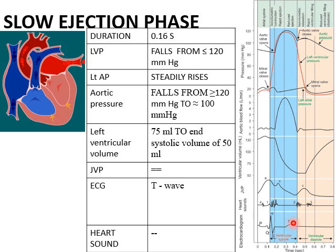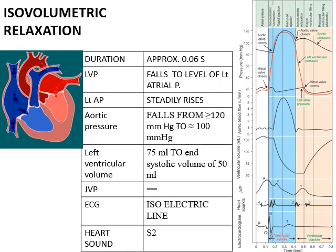Any abnormality in the reduced ejection phase may cause changes in the T wave. When ventricular pressure falls below 120 mmHg, closure of the aortic valve occurs; when it falls below 25 mmHg, closure of the pulmonary valve occurs. Closure of the semilunar valves at the end of the reduced ejection phase produces the second heart sound, which continues into the isovolumetric relaxation phase.